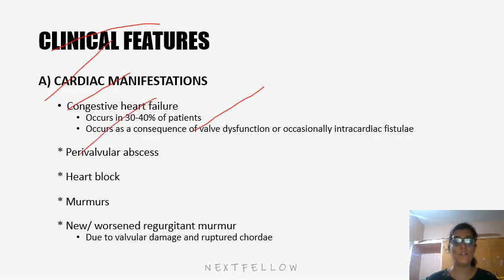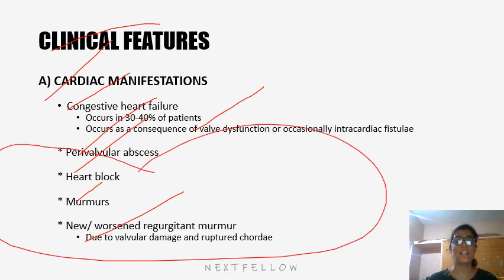There can be perivalvular abscess, heart block, and murmurs — new, worsened, or regurgitant murmur due to valvular damage and ruptured chordae. A changing murmur is characteristic of infective endocarditis, as the murmur keeps changing due to ongoing valve damage.